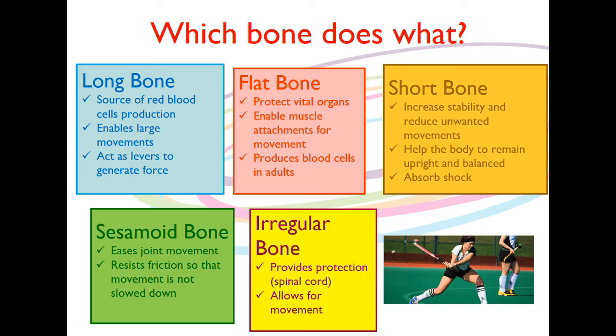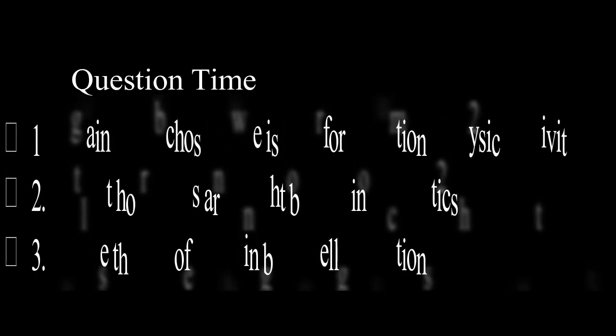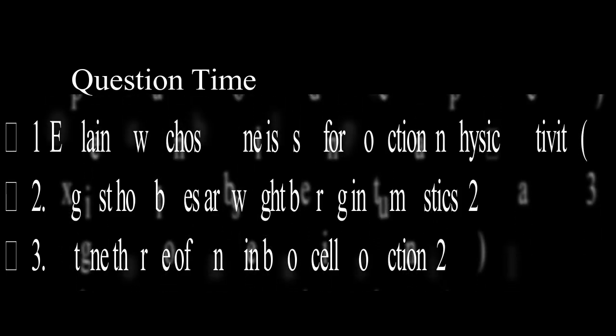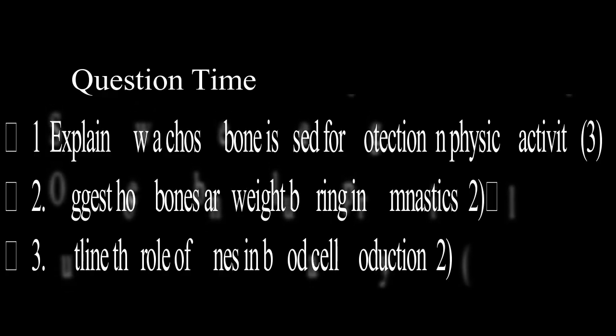That might be a topic you get in the exam, so it's something we may need to explore further. As always, we want to finish with some exam questions — we've got three for you now. Question one: explain how a chosen bone is used for protection in physical activity, for three marks. Question two: suggest how bones are weight bearing in gymnastics. And question three: outline the role of bones in red blood cell production. Pause it, think about those, come back, and answer the questions in the comments if you need any help.